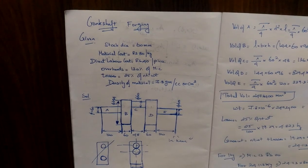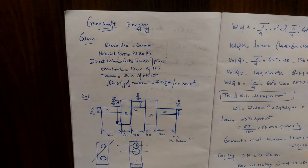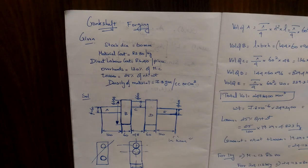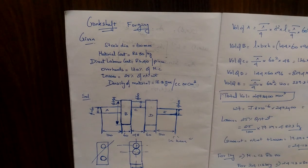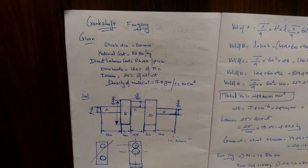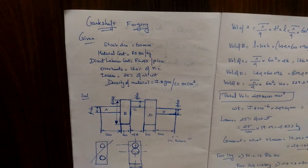There are two types of forging: hot forging and cold forging. Now, we will talk about the forging process. Forging is when we apply pressure to make a plastic deformation state into the desired shape.